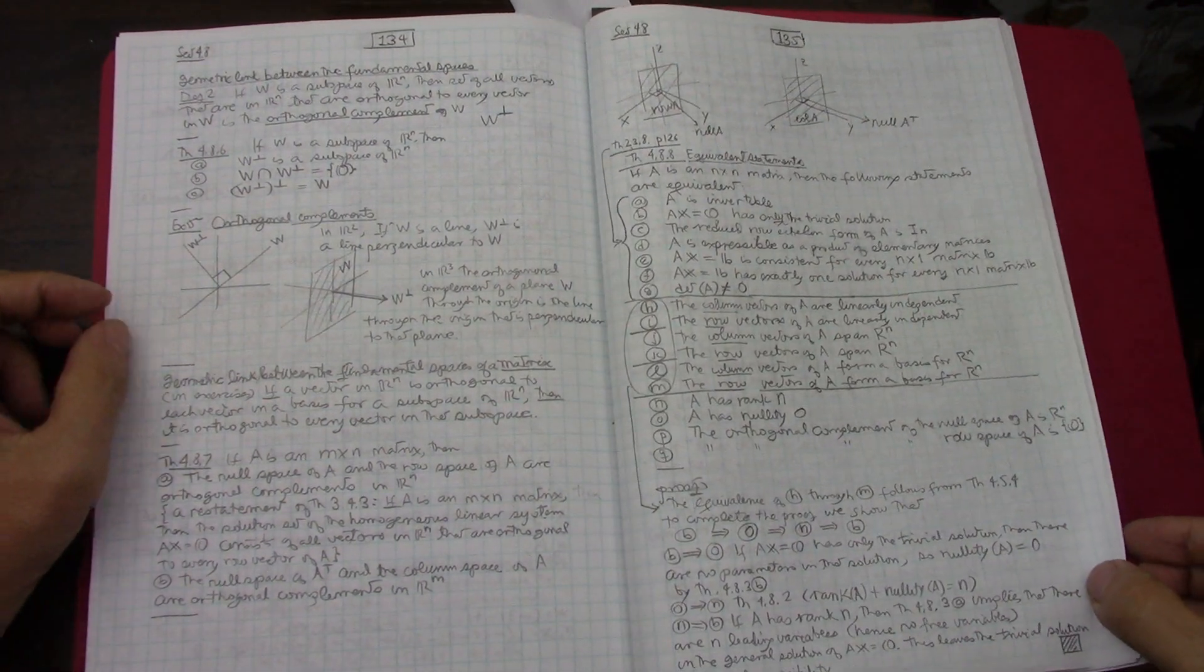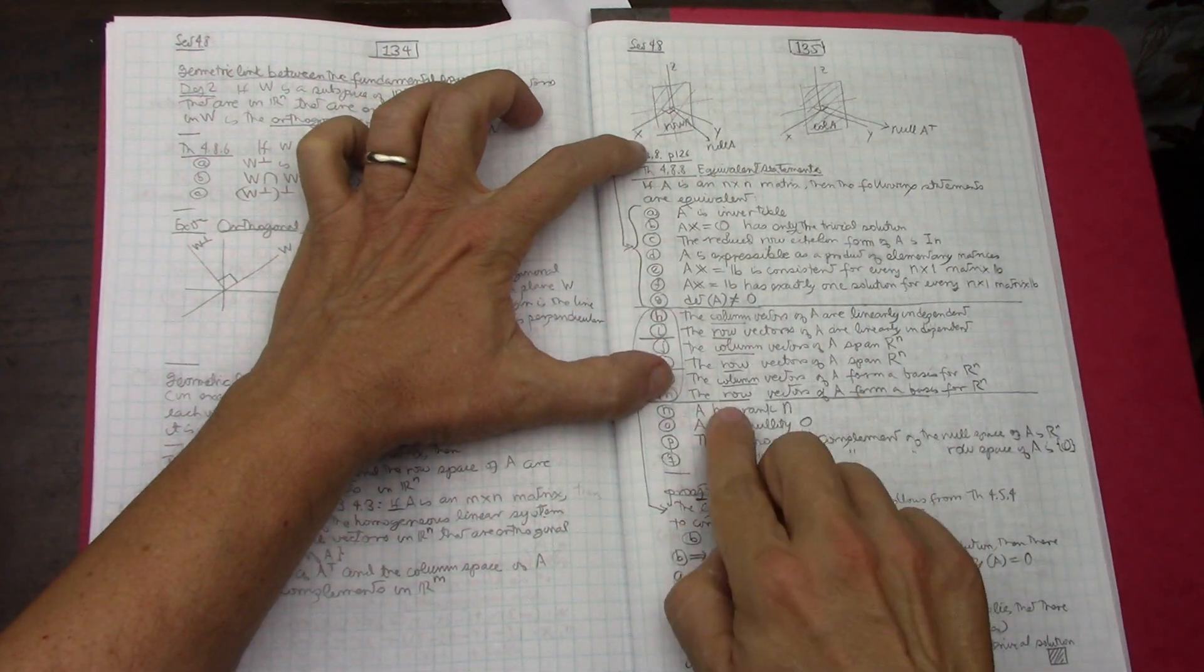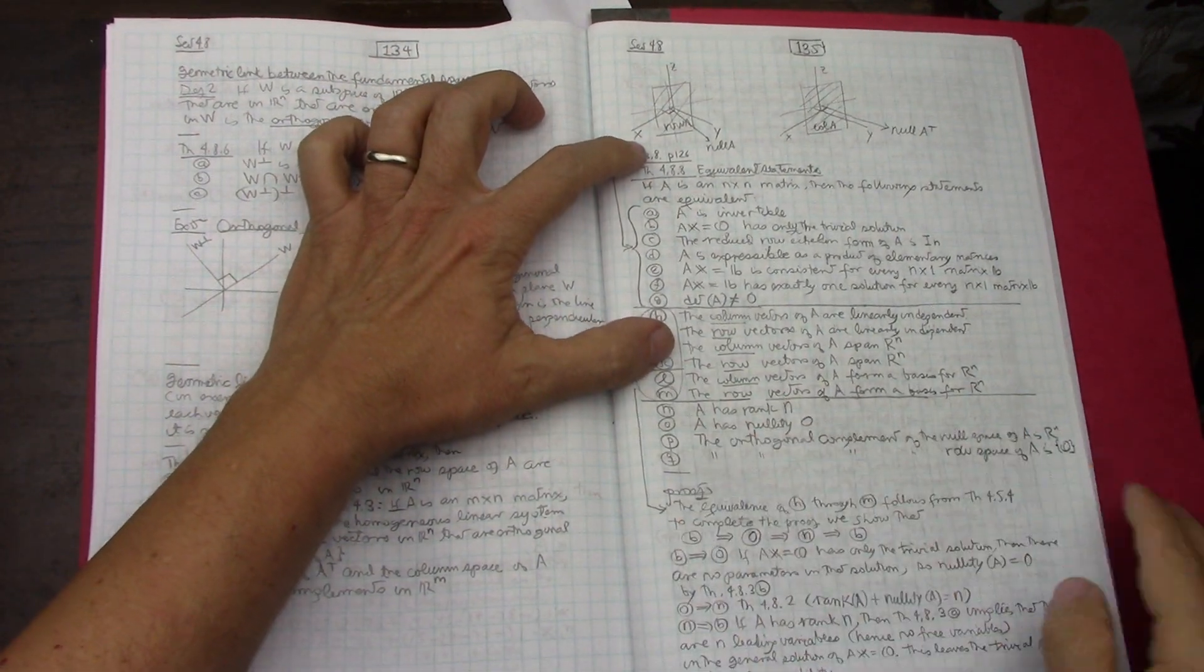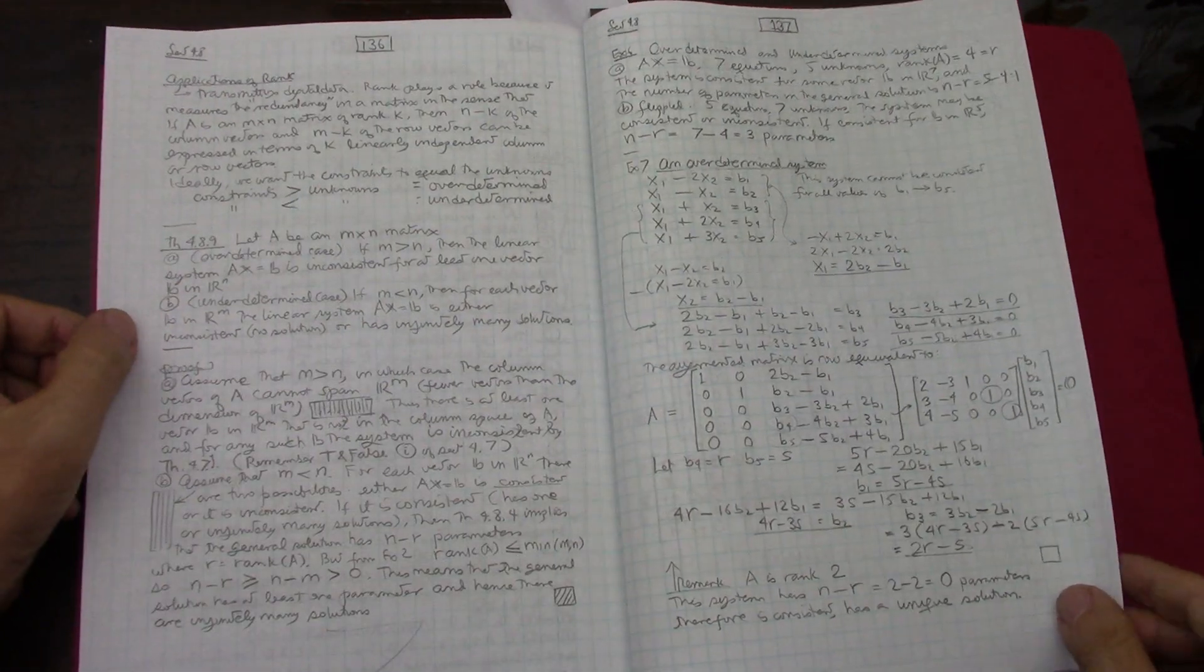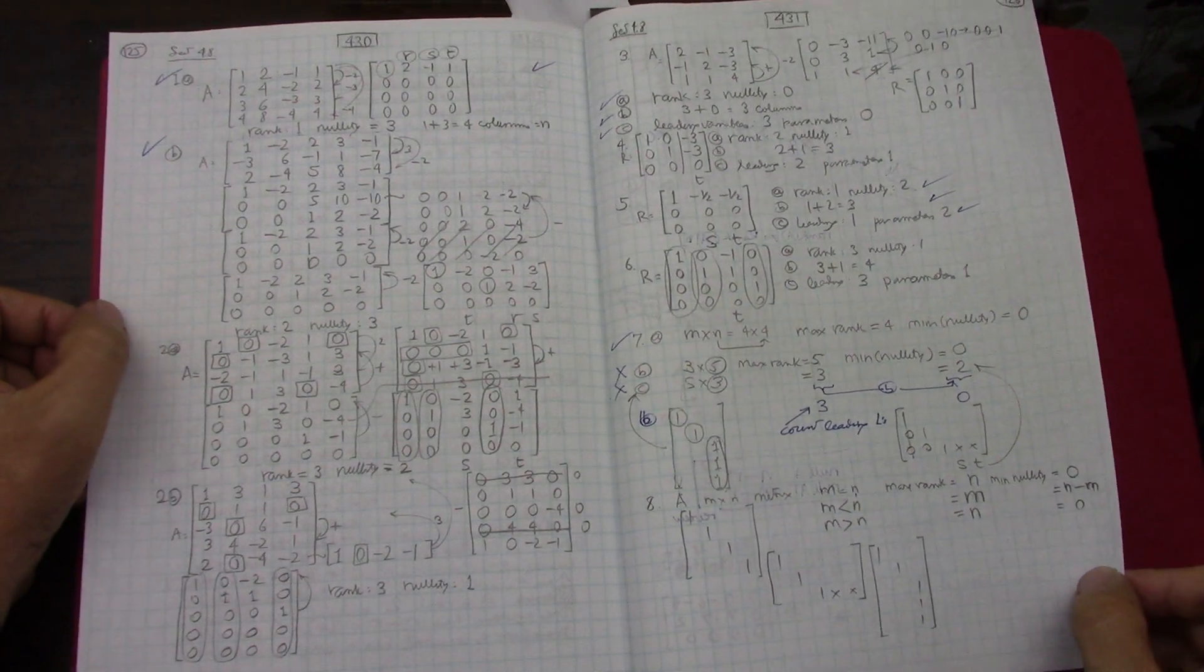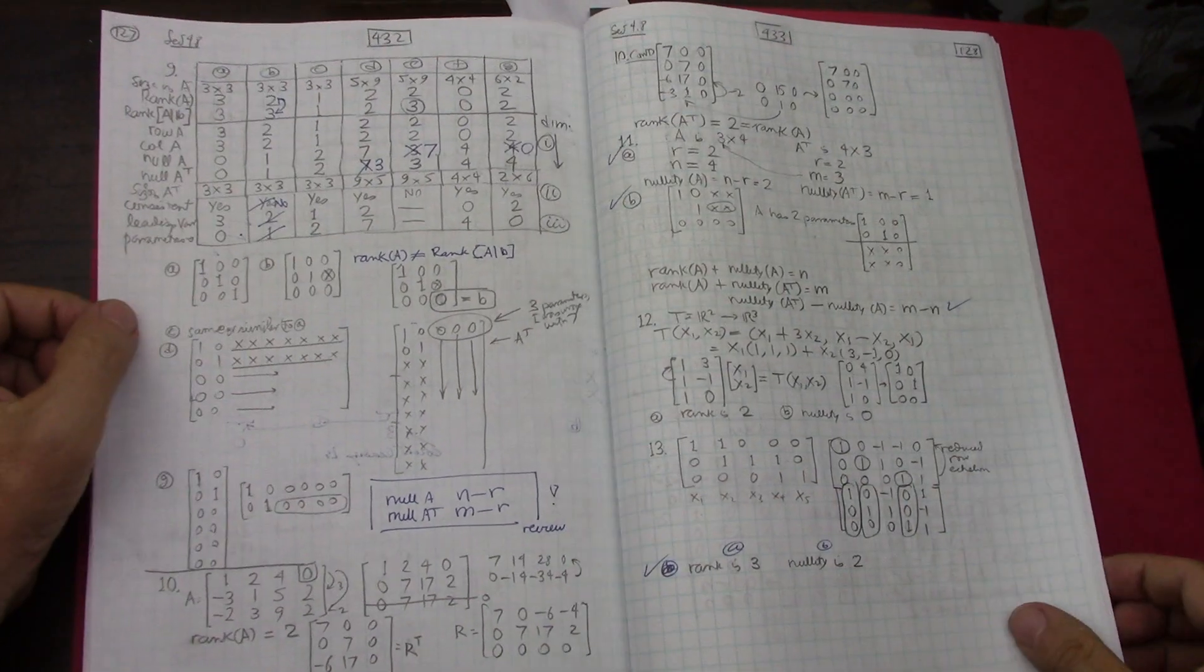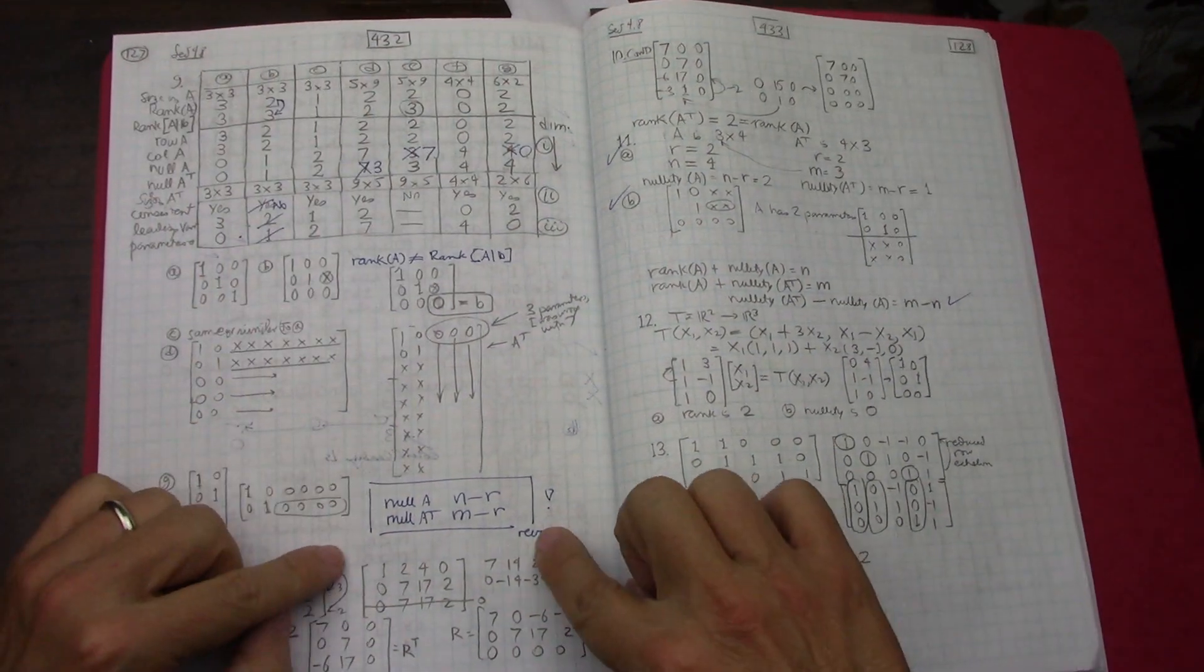As I showed, I like to divide what each group of the equivalent statements are. These are the ones that come from theorem 2.38. These are the ones that have to do with row and column vectors, and then rank and nullity and orthogonal complements.